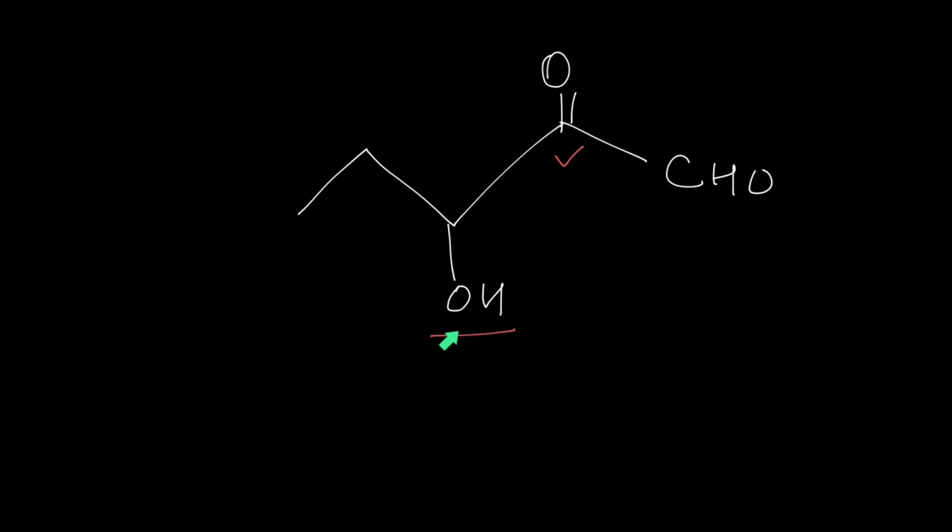Now out of these three OH, the ketone and the aldehyde, if you check the priority list you will find that aldehyde is on the top. Therefore the primary functional group will be aldehyde. And so this compound will be named as an aldehyde. And in the end we will write an AL.